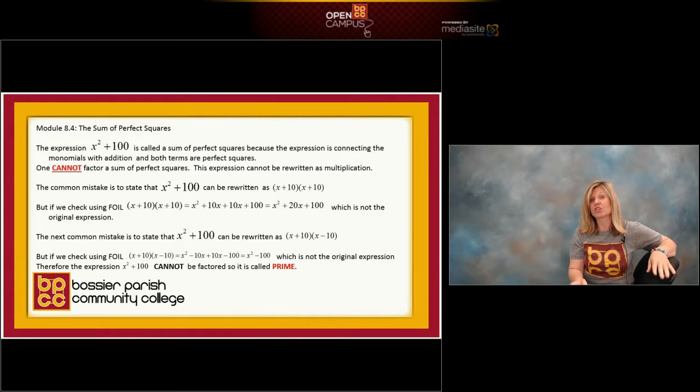An expression that is a sum of perfect squares. If you look in this module, I have the expression x squared plus 100. It's a binomial, two terms connected by addition, so we'd call that a sum. And yes, both x squared and 100 are perfect squares. x squared is x times x, 100 is 10 times 10.